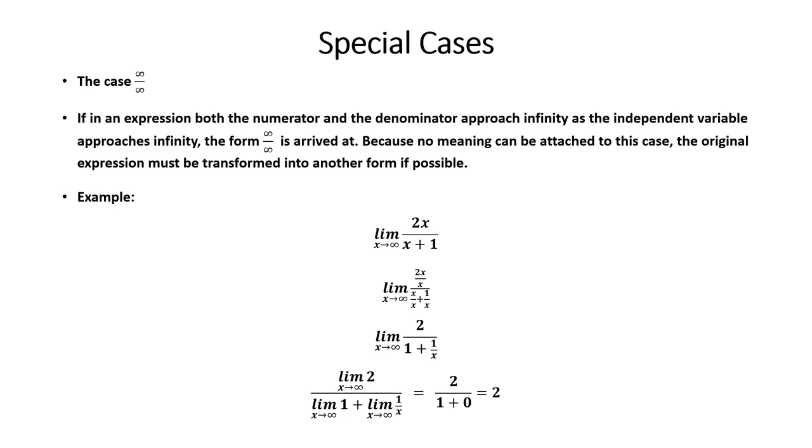The first special case is infinity divided by infinity. Now if an expression, both the numerator and denominator, approach infinity as the independent variable approaches infinity, the form infinity over infinity is arrived at. Because no meaning can be attached to this case, the original expression must be transformed into another form, if possible.